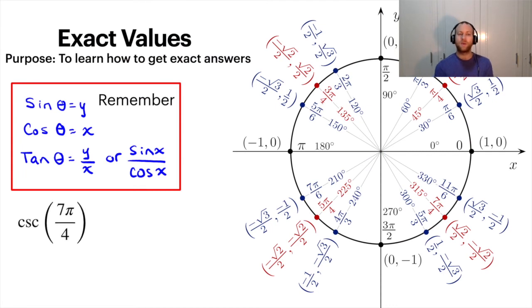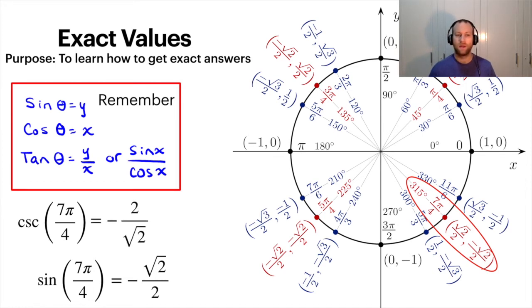Now let's try a different one. Now we want cosecant 7π over 4. So we look, 7π over 4 is at quadrant 4 here. Now with cosecant, the x and the y value aren't specifically related to cosecant, they're related to sine, cosine, and tangent. So what I would do is I would look at what is sine of this, because cosecant is 1 over sine theta. Sine is the y value, so we take the y value and then we take the reciprocal of this to get negative 2 over root 2. So that's going to be your value for cosecant 7π over 4.